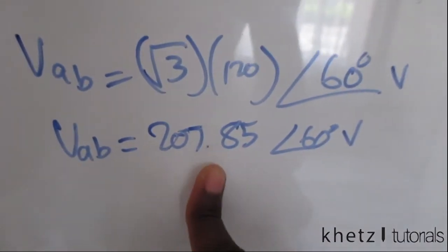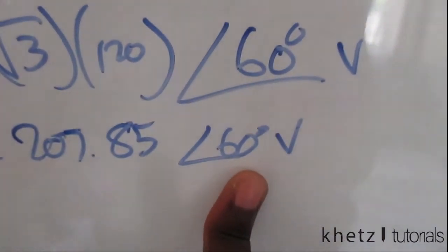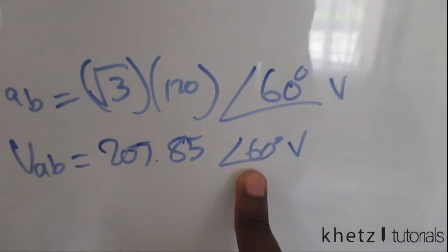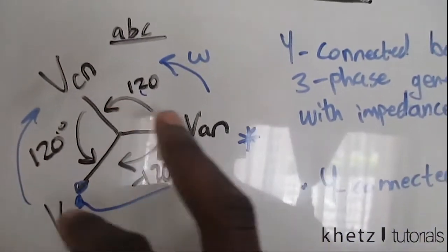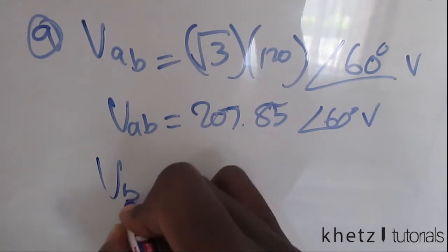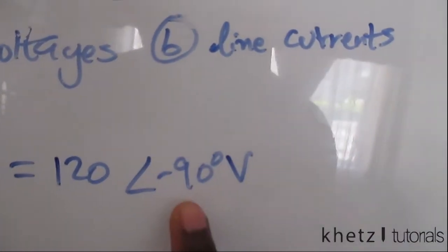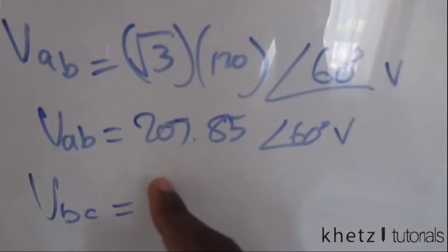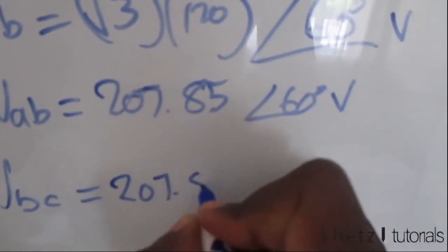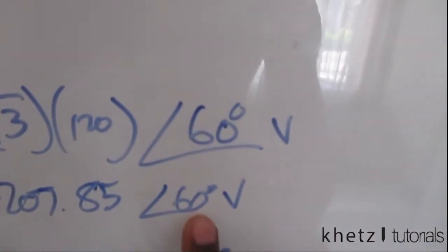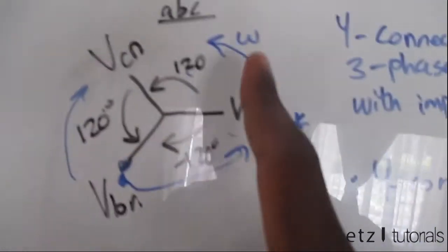The same amplitude applies to all other line voltages — the difference is just the angle, since they are also out of phase with each other by 120 degrees. For V_BC, you add 30 degrees to the angle of V_BN (which is negative 90 degrees), giving an angle of negative 60 degrees. So V_BC is 207.85 at negative 60 degrees. You can also verify this as 60 minus 120 using the sequence.